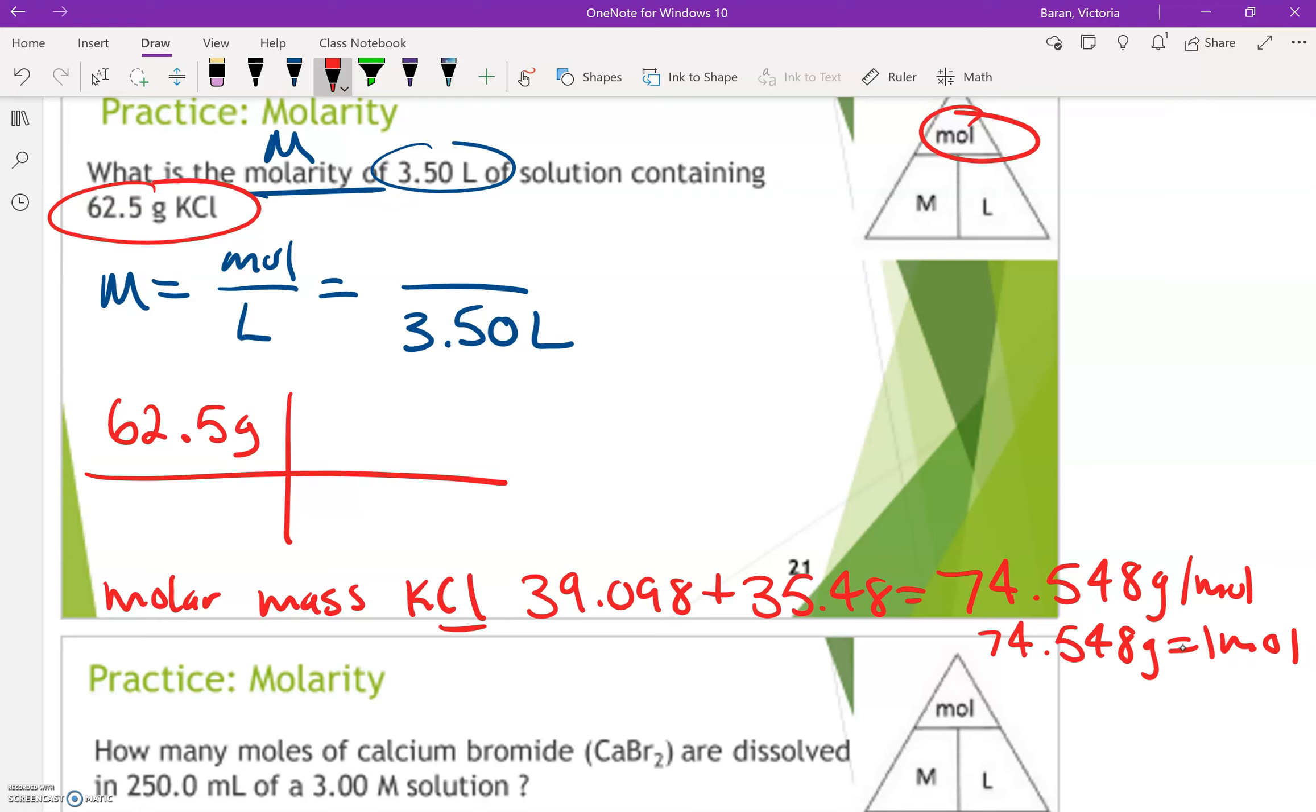On the bottom here, I have to have grams because these units have to be the same. Looking at my equality, I have 74.548 grams, and that is equal to one mole, which would go above it. Grams would cancel. So now my final answer will be in moles.